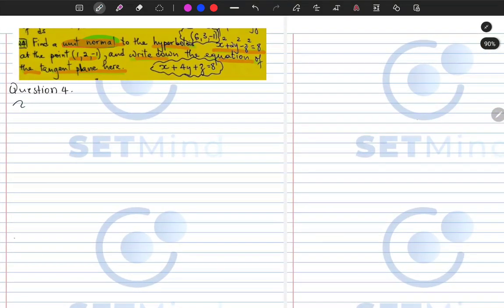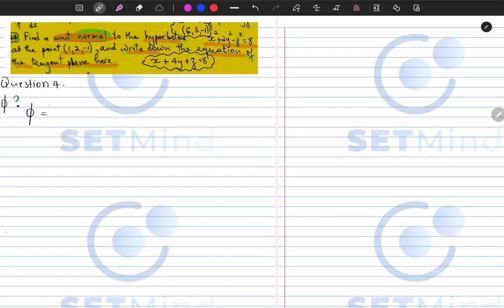So what we first need to figure out is exactly what is our function. If you are given an expression like this, all you need to do is transpose it to one side such that the other side has zero.